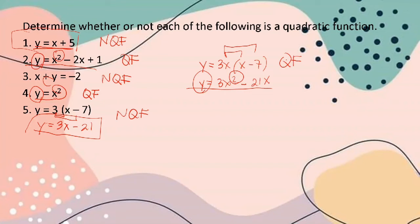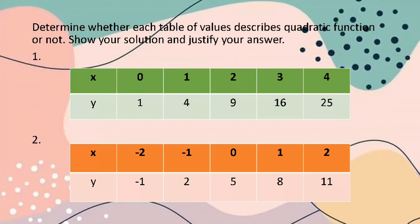In summary, to identify a quadratic function from a given equation, we need to consider the function symbol and the degree of two. Now let's proceed to identifying quadratic functions from tables of values. We will show solutions and justify answers.